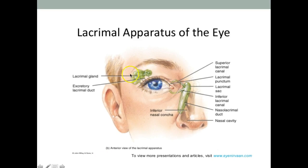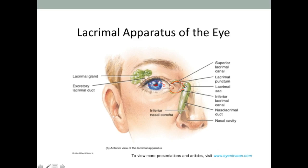Now let's look at some structures from the anterior view. The lacrimal gland is lateral. These little ducts are the excretory ducts — they move tears over the eye. The tears wash over the eye and drain here by the lacrimal canal, also called the lacrimal canaliculi.